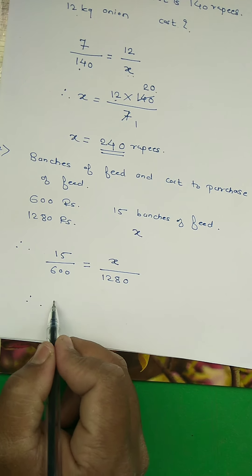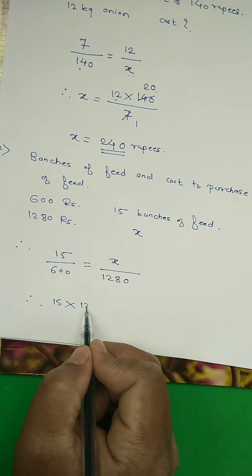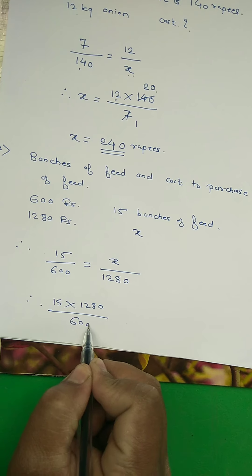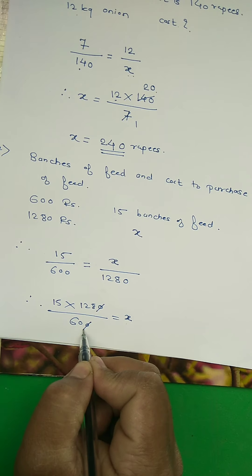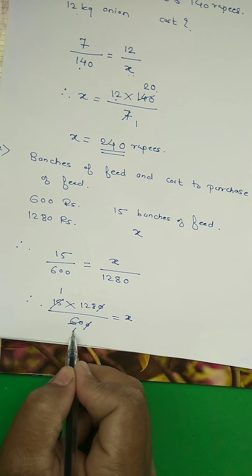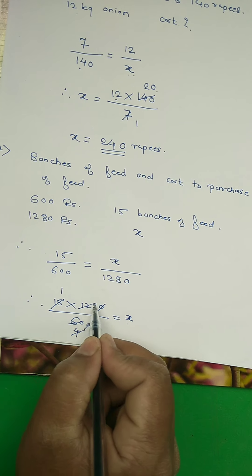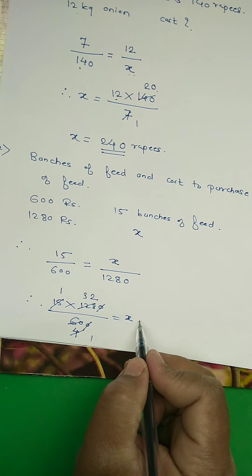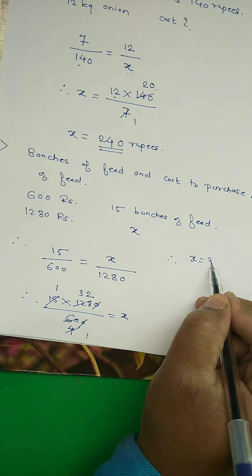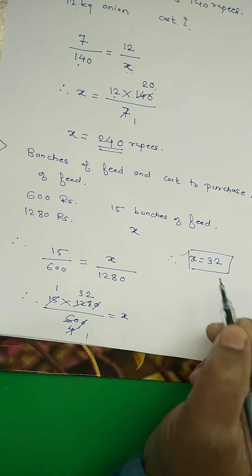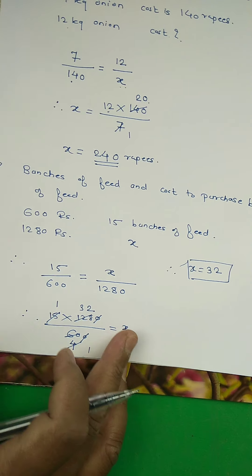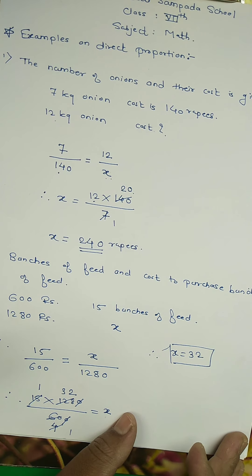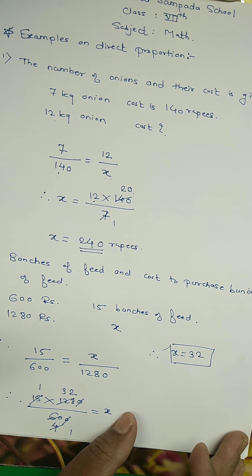To find x: 15 multiplied by 1280, divided by 600. The zeros cancel, and calculating gives x equal to 32. So for 1280 rupees we get 32 bunches of feed. I hope all of you understood how to solve examples on direct proportion. Thank you.